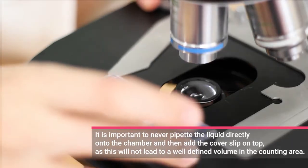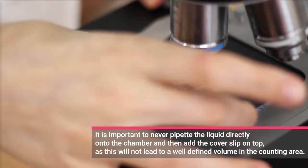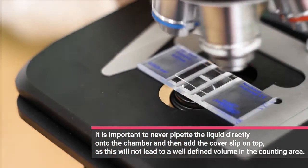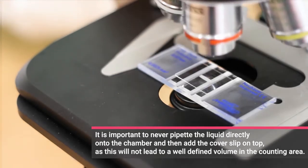Place the chamber under the microscope and choose a low magnification. Focus on the quadratic structure called counting grid and see if the cells are spread equally. Now choose a proper magnification and use phase contrast to see the counting grid in more detail.